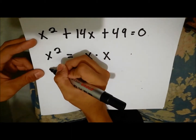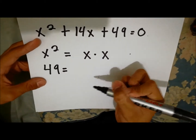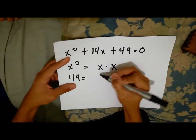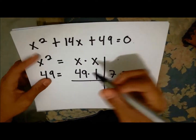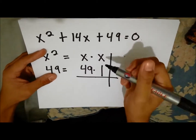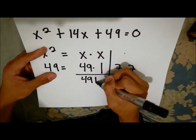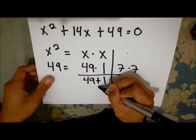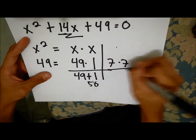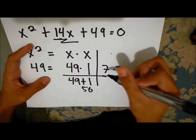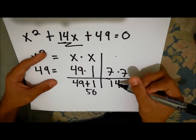The last term is 49. Since 49 has two factors, we must do trial and error to find its answer. We must multiply the factors. 49 times 1 equals 49, and 1 times 1 equals 1, which produces 50 — and that is not 14, since that is what we are finding. So we must go to the other one. If we add 7 plus 7, it will be 14. So that is the answer.